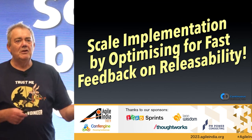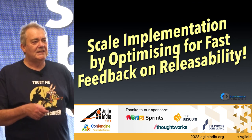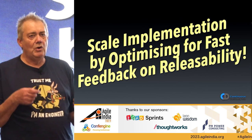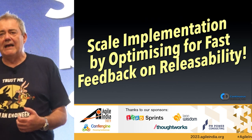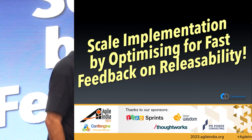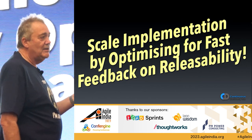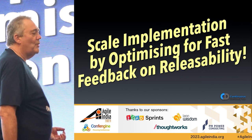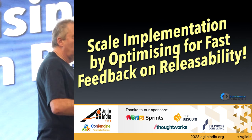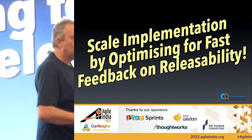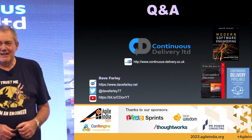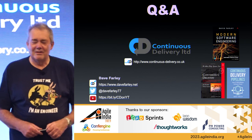And we scale implementation by optimizing for fast feedback on releasability. If we can do both of these things — scale decision making and scale implementation — that gives us an opportunity. The organizations we think of as good at operating at big scale do both of these things. Thank you very much — that's the end of my talk.